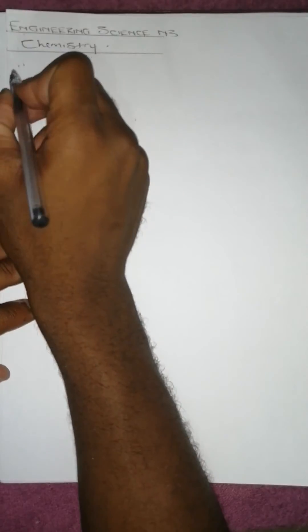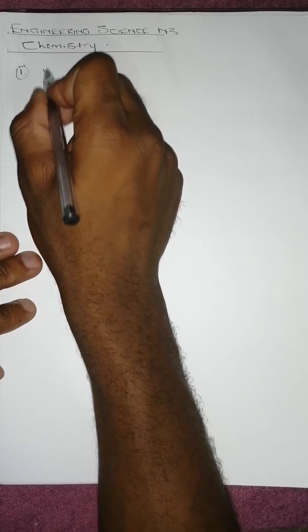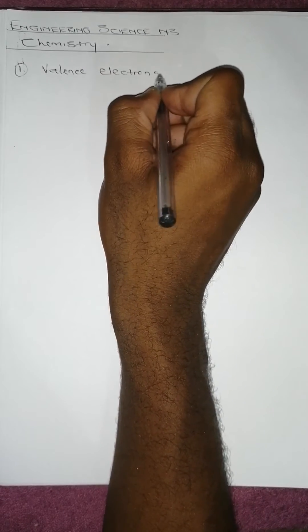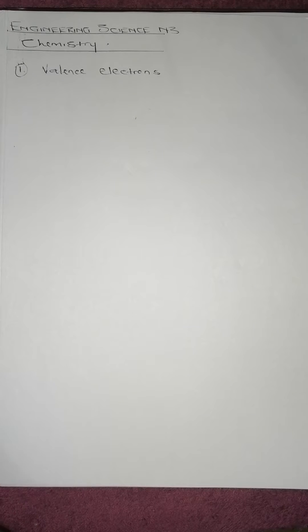Question one: define valency electrons. Valency electrons are electrons in the outer shell which can be shared or transferred from one atom to another in order to form a bond. They can be shared mutually to form a bond, whereby the newly formed substance has different properties from the initial substances which combined to form that bond.